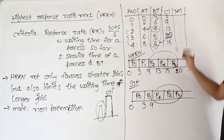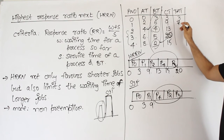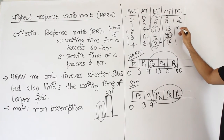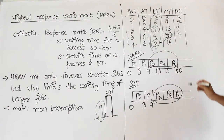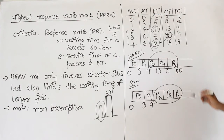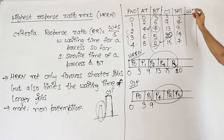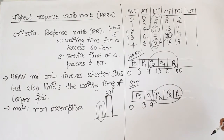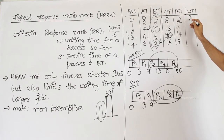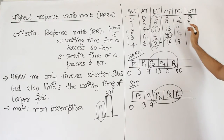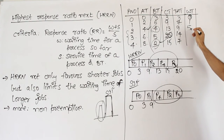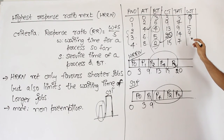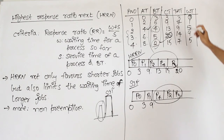Turnaround time equals completion time minus arrival time: P0 = 3, P1 = 7, P2 = 9, P3 = 14, P4 = 7. Waiting time equals turnaround time minus burst time: P0 = 0, P1 = 1, P2 = 5, P3 = 9, P4 = 5.